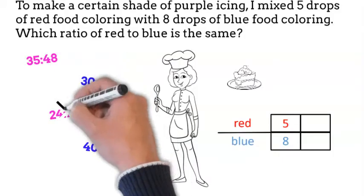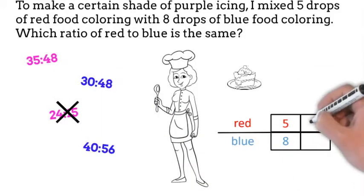Notice, the greater number is 2nd, which means that 24 to 15 cannot be correct.